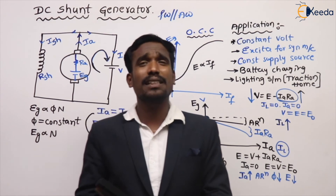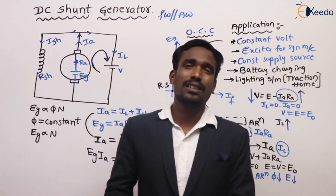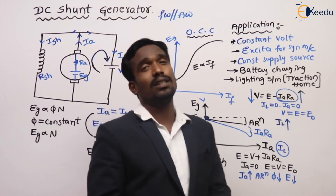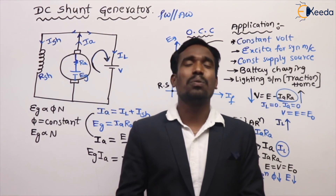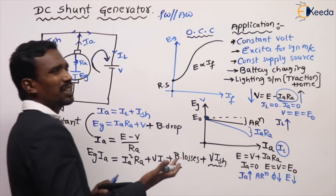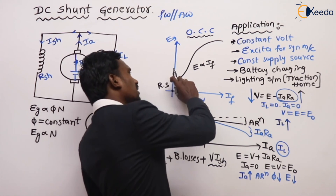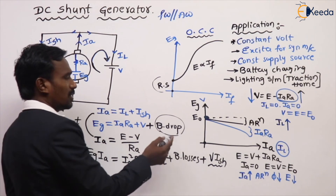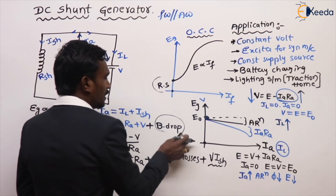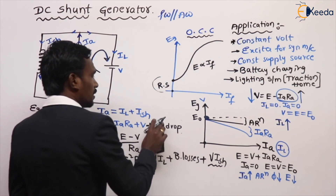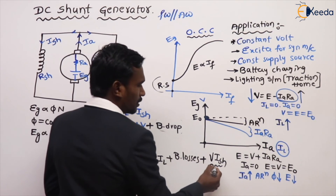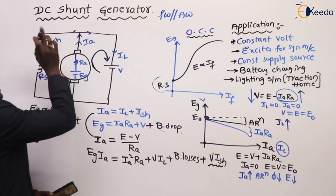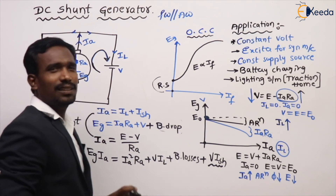Regarding the applications of separately excited generators — that is less common. If DC shunt generators are not available, you can use separately excited generators. Both are essentially the same; the only changes are the shunt field loss term in the equations and the fact that one is self-excited while the other is separately excited.